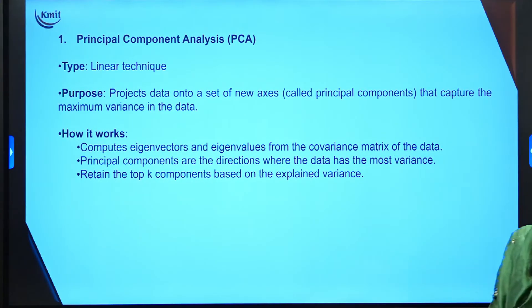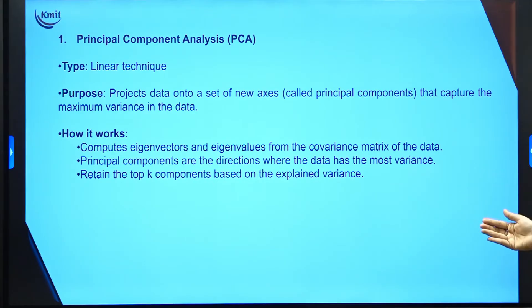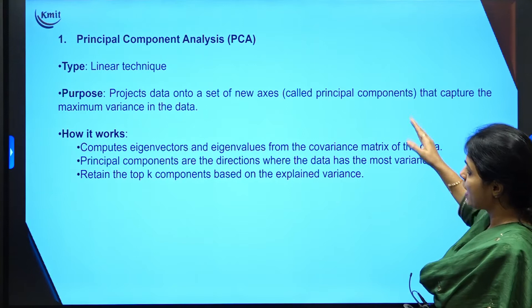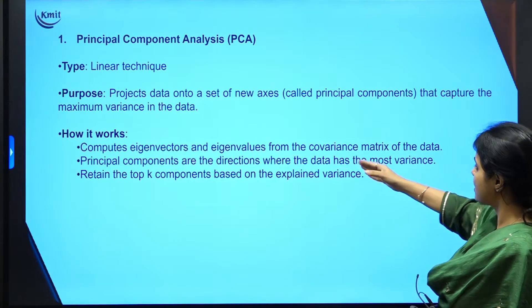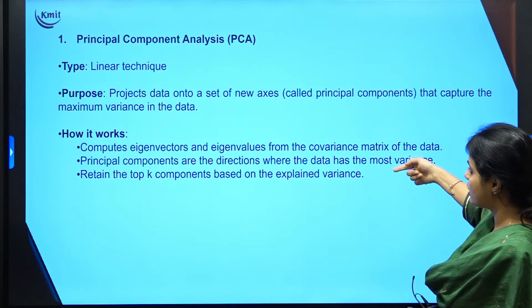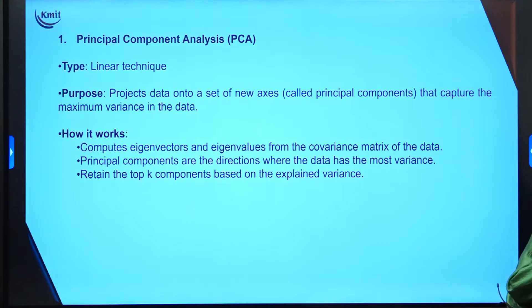PCA is a linear technique that operates on linear data. We use PCA to project data onto a set of new axes, reducing data from 3D to 2D or 1D — these new axes are called principal components, which capture the maximum variance in the data. PCA computes Eigenvalues and Eigenvectors from the covariance matrix. The principal components are the directions of highest variance, and we retain the top components based on explained variance.